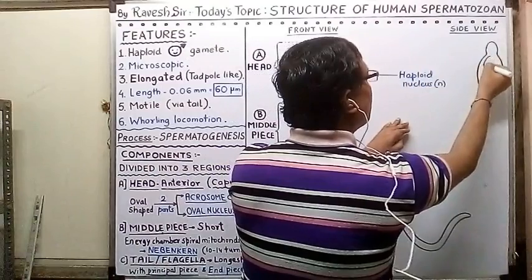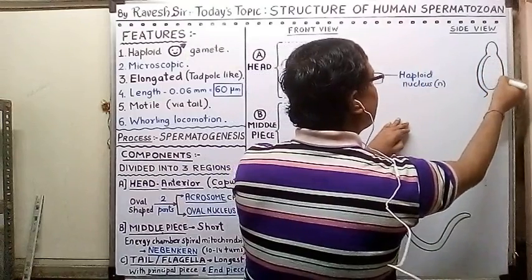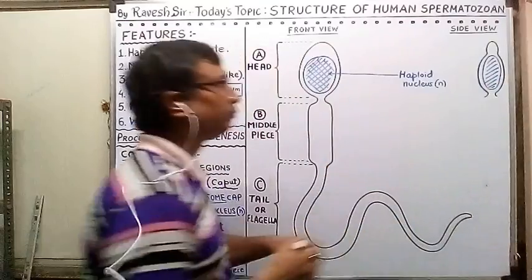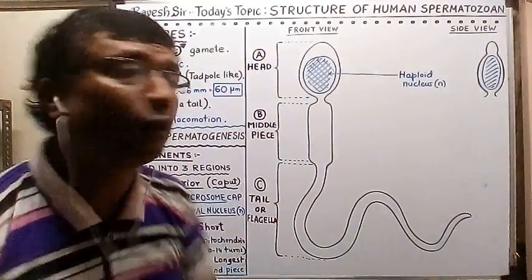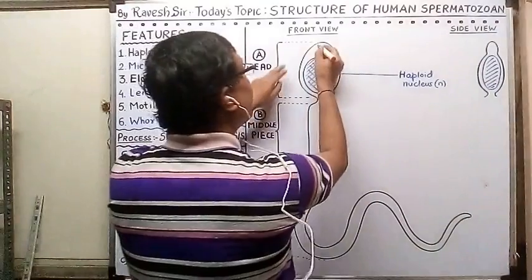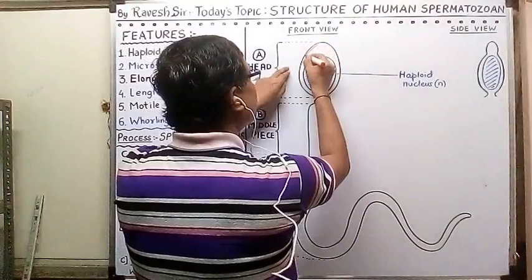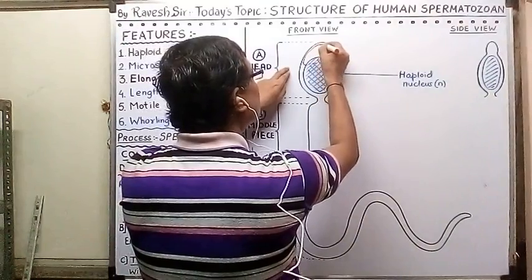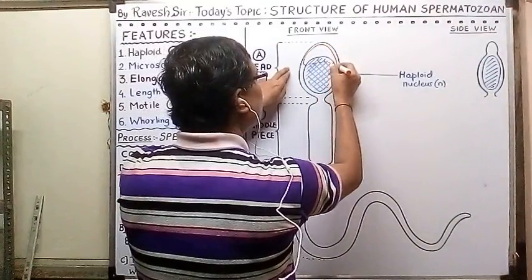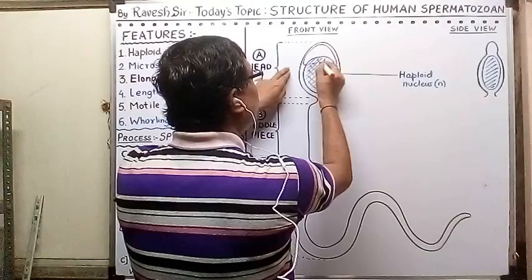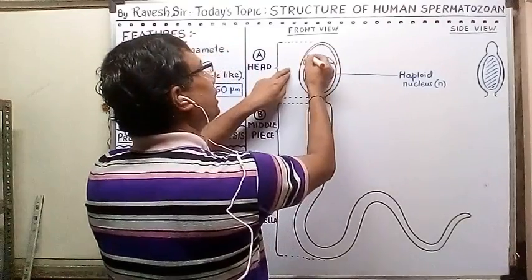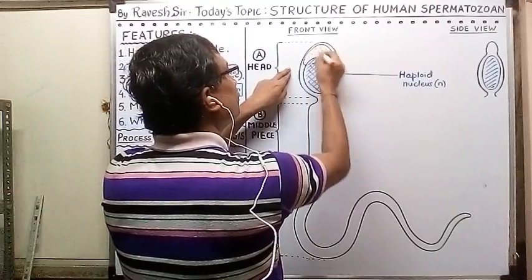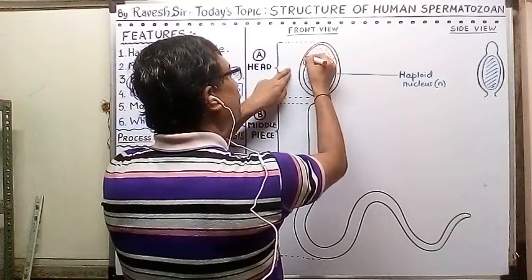Above the nucleus there is a cap-like structure. This cap-like structure partially covers the nucleus — it covers the nucleus partially from the anterior side.